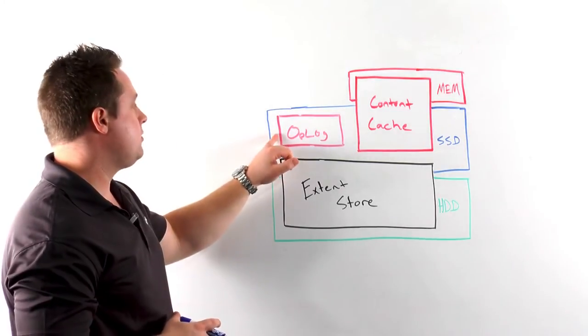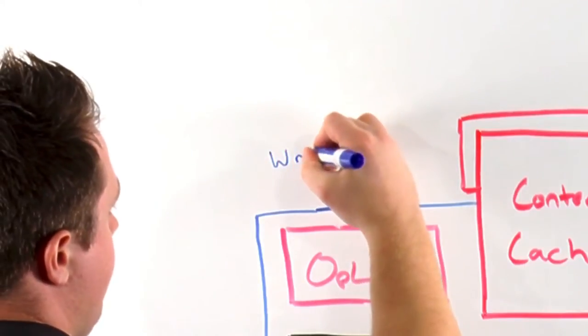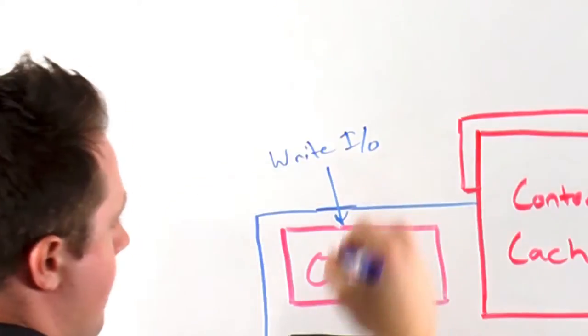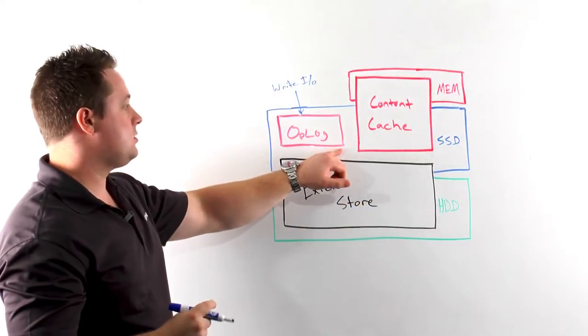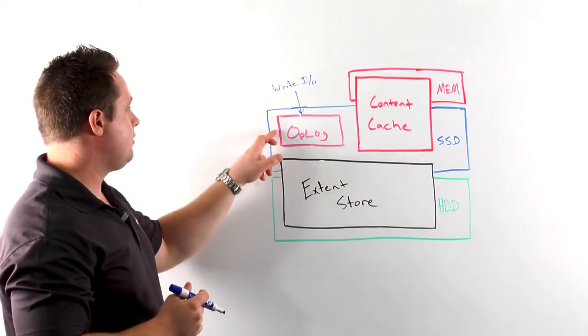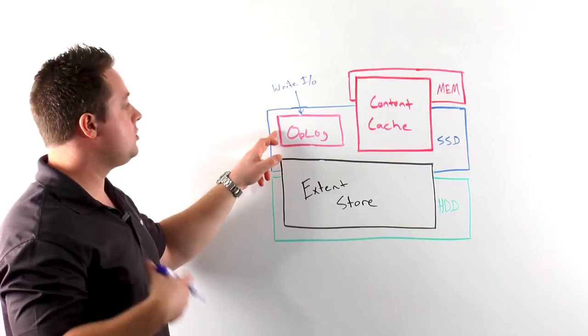The first piece in the I/O path is what we call our oplog or operations log. Essentially, the oplog acts as a write buffer for new incoming write I/O. The oplog is stored on SSD, which allows us to rapidly facilitate the write I/Os and is synchronously replicated to one or two other nodes within the cluster to ensure data availability.